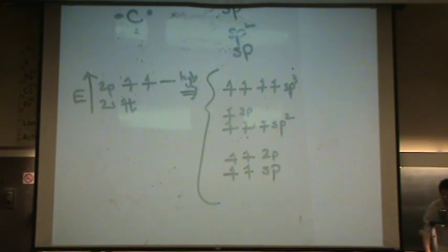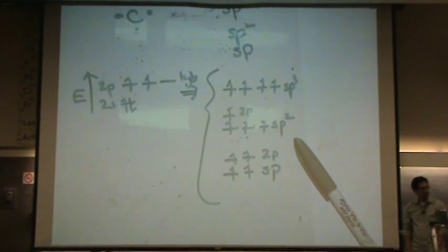The top type gives you single bonds - single bonds that are tetrahedral in shape. The next type will give you usually double bonds. The 2p orbital makes the double bond, and that's a trigonal planar shape. This is all kind of Chem 2A stuff.